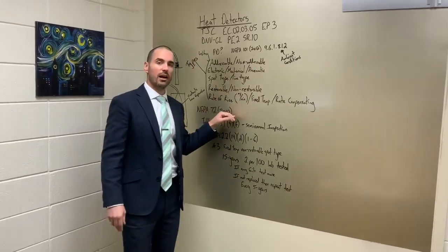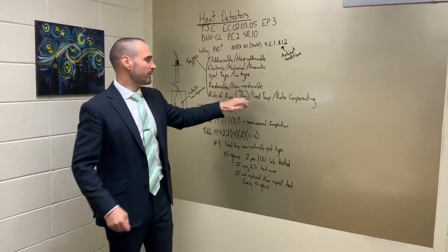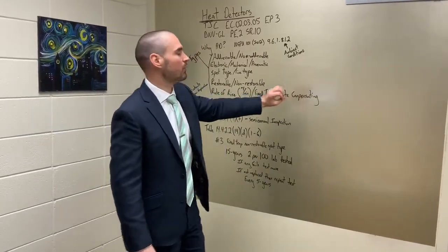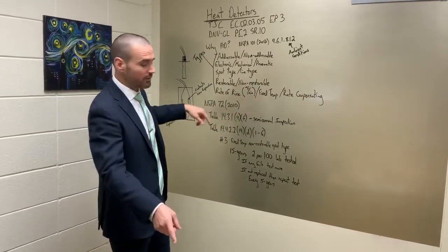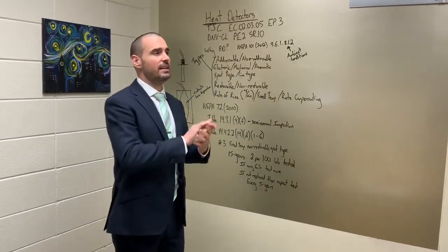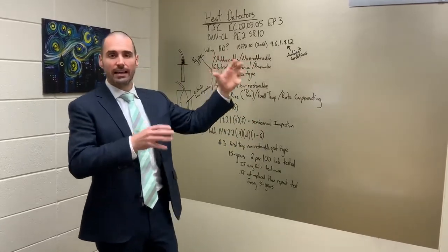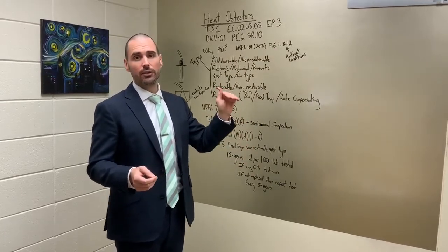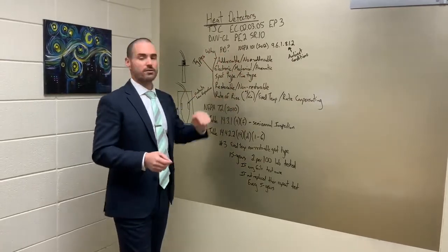There's several different types of detectors from how they activate. Rate of rise, fixed temperature, and rate compensating. You're not going to find as many rate compensating, but we'll still talk about them. You can also have combination rate of rise, fixed temperature, which we do have an example of. Rate of rise simply means when the ambient temperature raises a certain amount in a given set period of time, it's going to trigger an alarm. The most common is 15 degrees in one minute. So if the temperature goes up 15 degrees within one minute, it triggers an alarm.